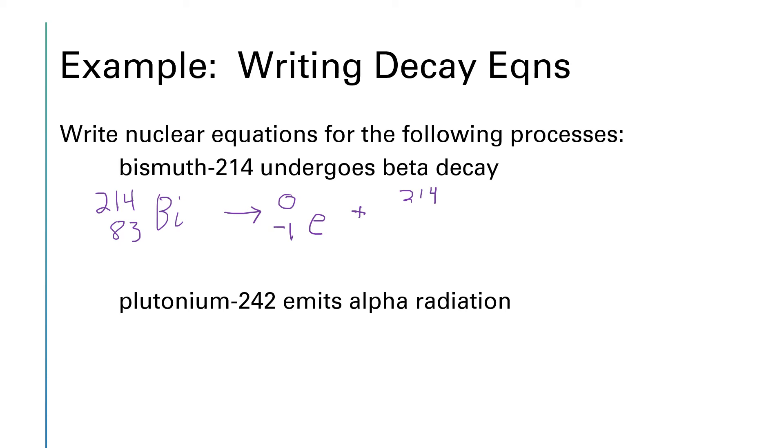For the atomic numbers, when I add up the atomic numbers on the right hand side they have to equal 83 from the left hand side. Since I already have a minus one, that missing piece has to be 84. 84 minus one gives me 83. When I look at the periodic table, the element with atomic number 84 is polonium. So there we have a balanced beta decay reaction.